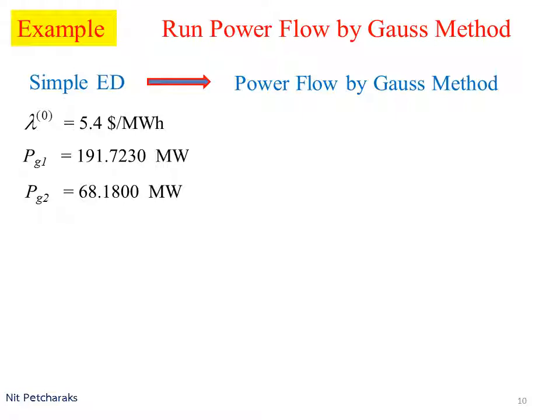First, we perform simple economic dispatch without loss consideration. We've got lambda equals 5.4 dollars per megawatt hour, P_G1 equals 192 megawatts, P_G2 equals 68 megawatts.